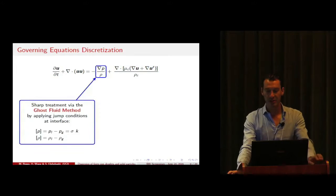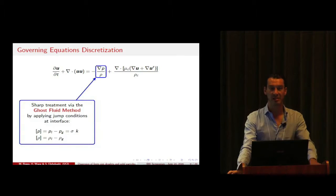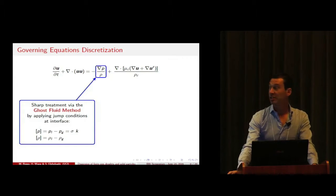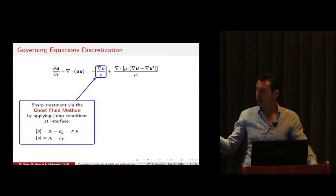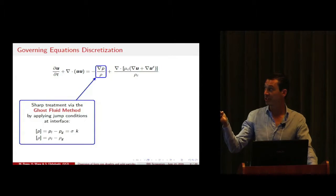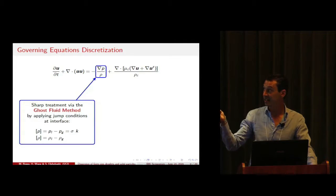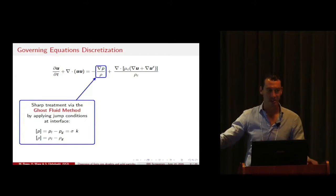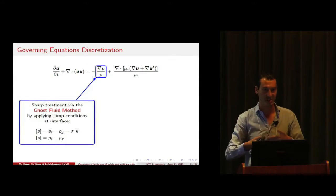The jumps in the pressure term have been treated sharply by using a ghost fluid method. The jump conditions in this way are applied for the pressure directly at the interface. Notice that here we just enforce the pressure jump due to the capillary forces because we smoothed out the jumps in the viscous term, so we don't have to account again for the jump in the shear stresses.